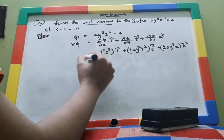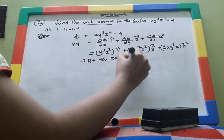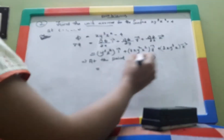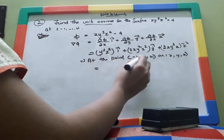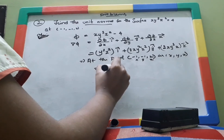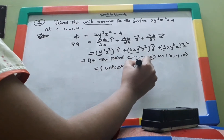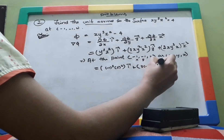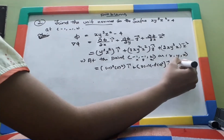Now we take the point (-1, -1, 2) for x, y, and z. Substituting into del ψ, we get: y³z² î + 3xy²z² ĵ + 2xy³z k̂. Putting in the values: the î component uses y³z², the ĵ component uses 3xy²z², and the k̂ component uses 2xy³z.